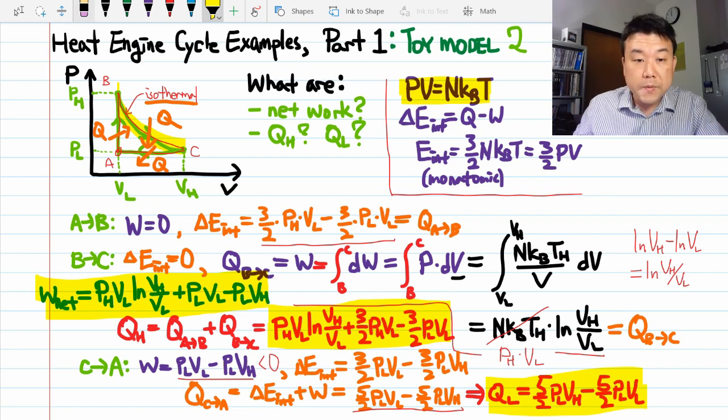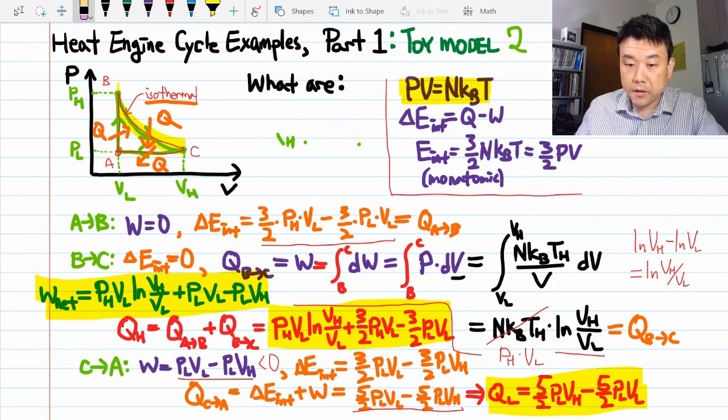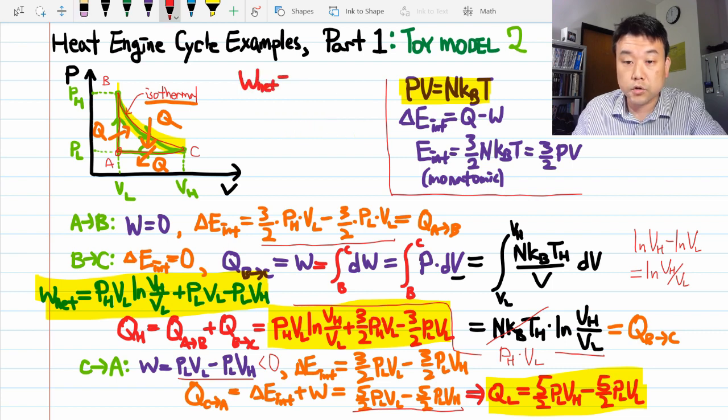I guess we better plug in numbers to see what that looks like. So, as before, you can algebraically verify that the network done is equal to QH minus QL. But let me leave that to you.